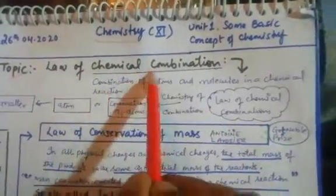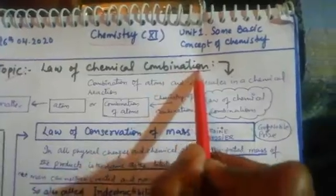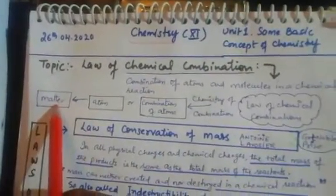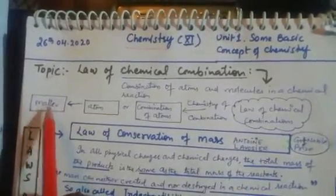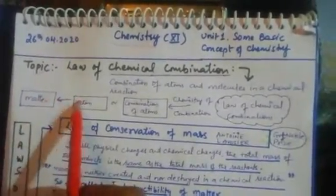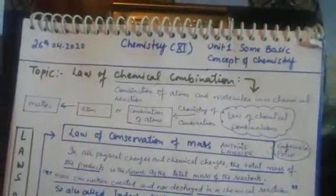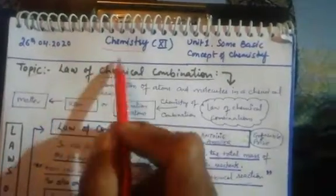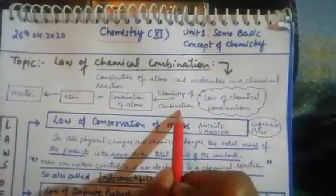Today I'm going to start a new topic: the Law of Chemical Combination. To understand this, we need to know what chemical combination is. Matter is all substance which occupies space and has mass. Matter is basically made up of atoms — the basic constituent particle of matter is the atom. Whatever things are in our surroundings are made up of atoms, and chemistry is the study of atoms. By combining atoms we can get new substances.